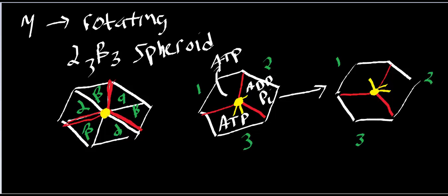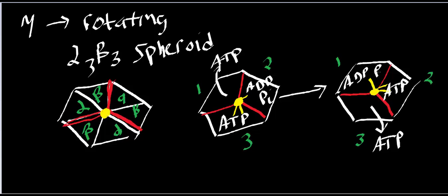In the first conformation of the gamma shaft, a particular subunit was good at binding ADP and phosphate. When the gamma shaft rotates, it changes conformation, and now ADP and phosphate ligation occurs — forming bound ATP. Where there were no yellow lines, ATP was ready to leave, and where there was one line, that subunit binds ADP and phosphate.